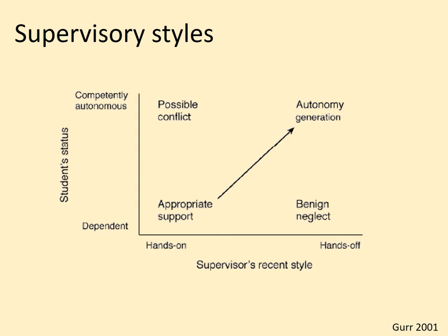Another model of supervision was developed by GER in 2001. This one takes into account where a student is on their overall journey, or where they are in terms of a certain task they're most recently working on. It considers what someone's been doing most recently as a supervisory style, and also where the student is in terms of their growth in a given area — from dependent to autonomous.